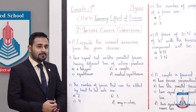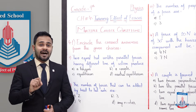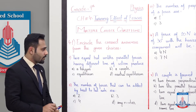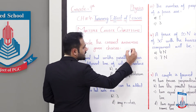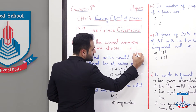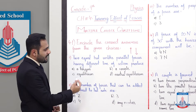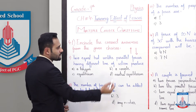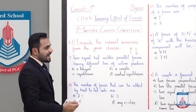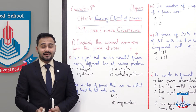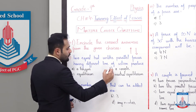Two equal but unlike parallel forces means they are in opposite directions, and having different line of action. If we suppose two such forces acting with different lines of action, when they have different lines of action, they produce a couple. So the correct option is B, which is a couple.